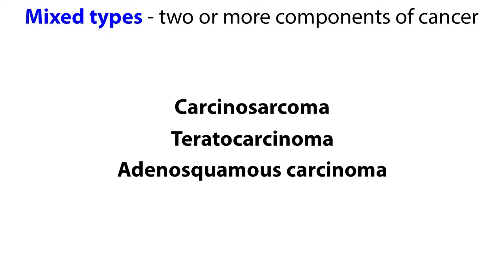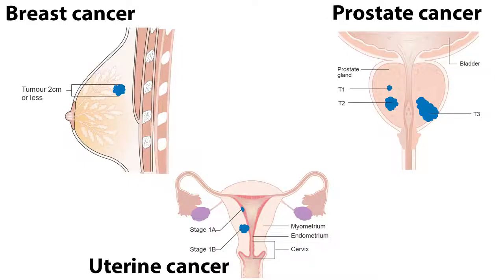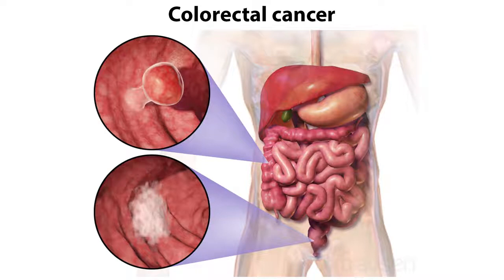Mixed types of cancers have two or more components of cancer, such as carcinosarcoma or teratocarcinoma. Whereas medical professionals refer to cancers based on their tissue type, the general public is more familiar with cancer names based on their primary body sites. The most common sites include skin, lungs, female breasts, prostate, uterus, colon, and rectum. Cancer names based on primary site are often not as accurate as those based on tissue type; however, cancer can be classified by either. For example, uterine cancer is the same as carcinoma of the uterus.